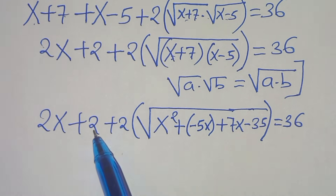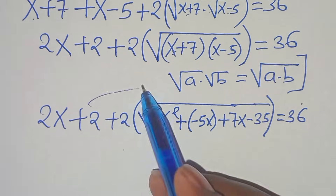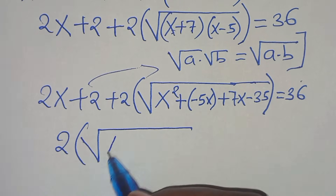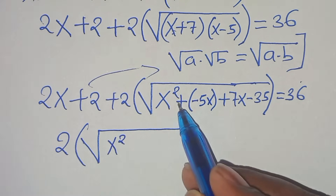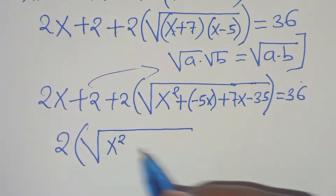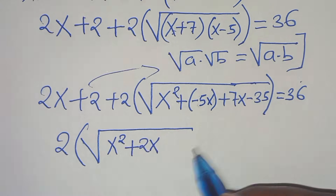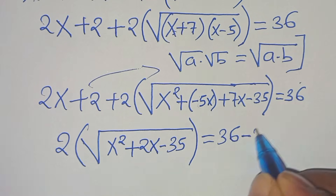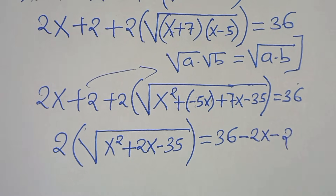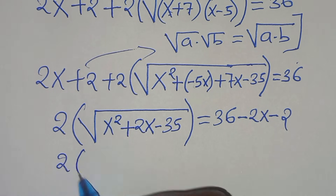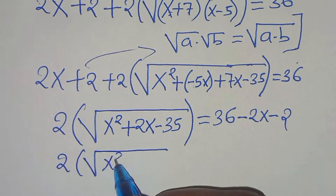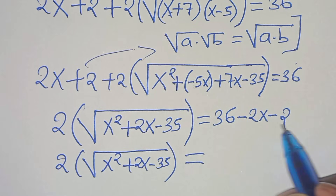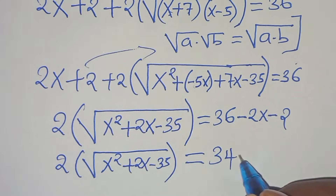Taking 2x plus 2 to the right-hand side: 2 times the square root of (x squared plus 2x minus 35) equals 36 minus 2x minus 2. Simplifying the right side: 2 times the square root of (x squared plus 2x minus 35) equals 34 minus 2x.